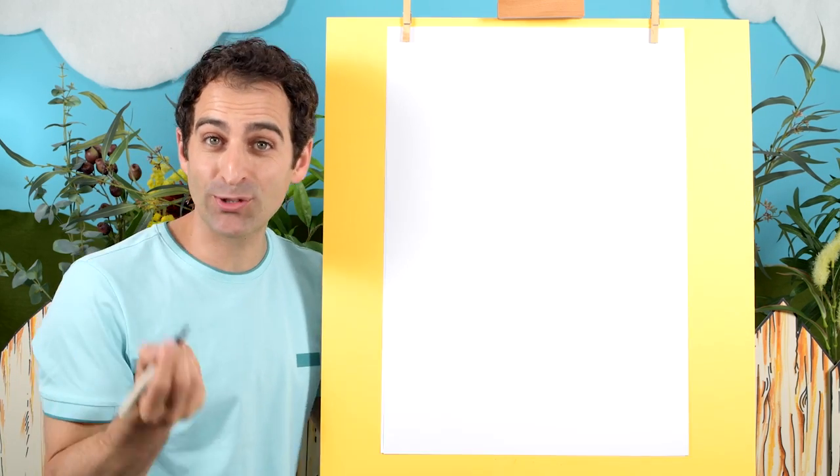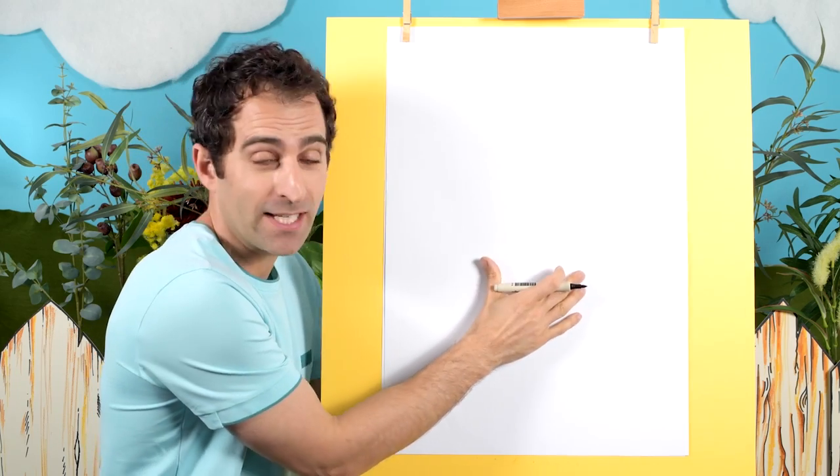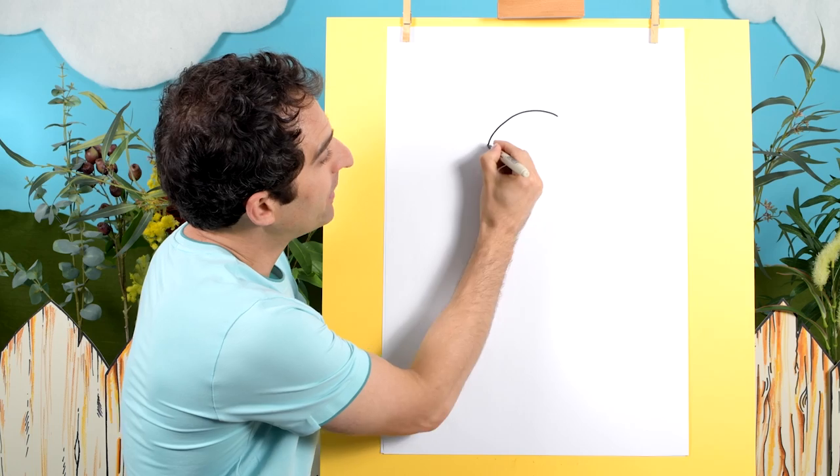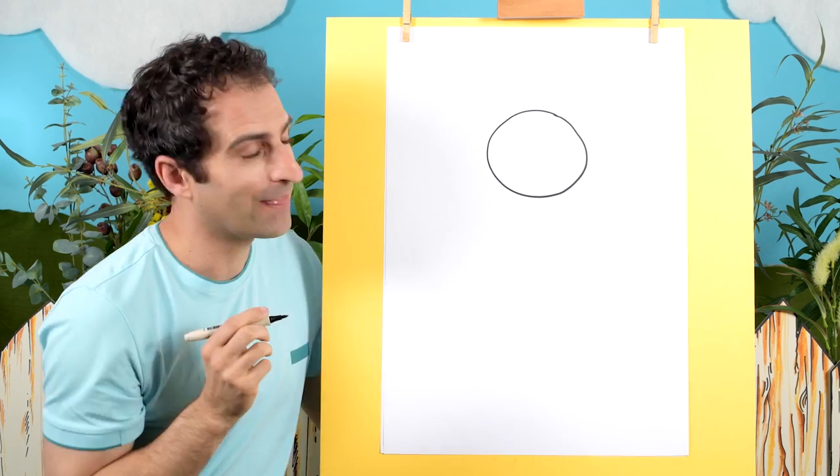Okay, let's begin with drawing a circle on our page. That will be up the top here and we'll have space down here for the body. So a nice big circle for her face. There we go.